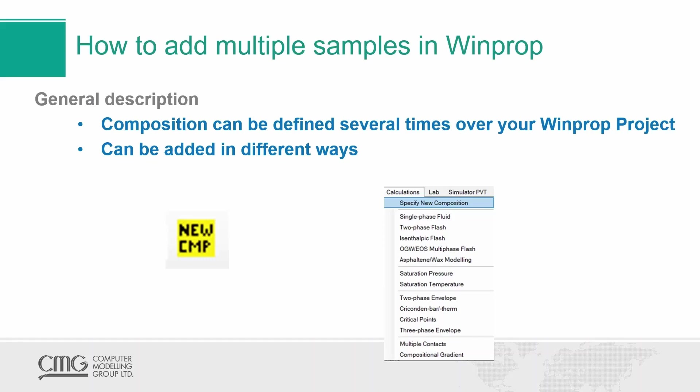It is important to know a little bit about Wimper, especially related to the composition. Every time that we have a sample, we need to define a new composition in the system. The composition can be defined several times in Wimper with no limitation. It can be defined in different ways — through calculations at the upper menu, or through several icons in the program.